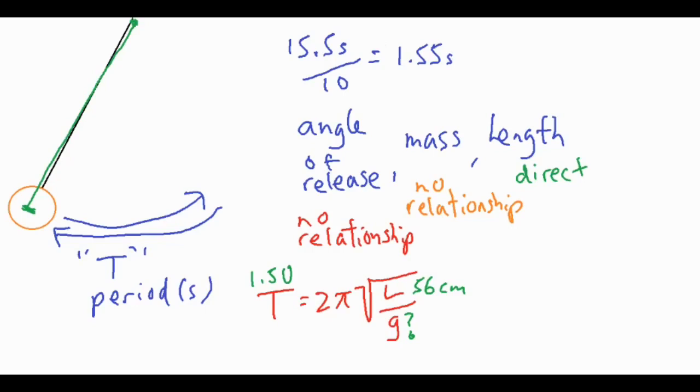So now we have 1.50 equals 2π times the square root of 56 centimeters, which we would convert to 0.56 meters, and then actually plug everything in. So it would look something like this: 1.5 seconds equals 2π times the square root of 0.56 over little g.